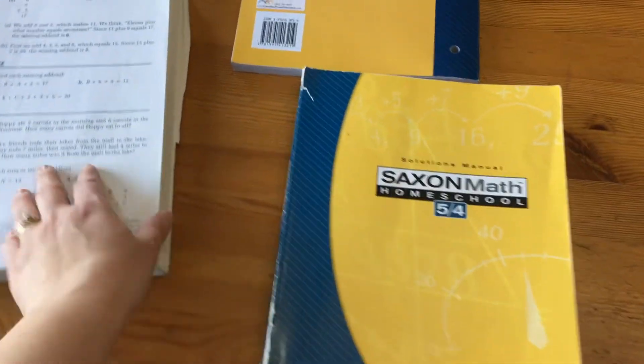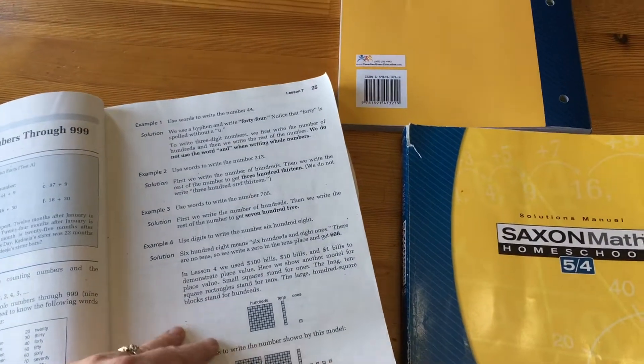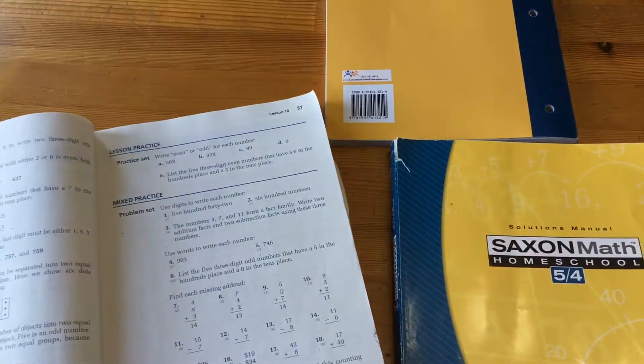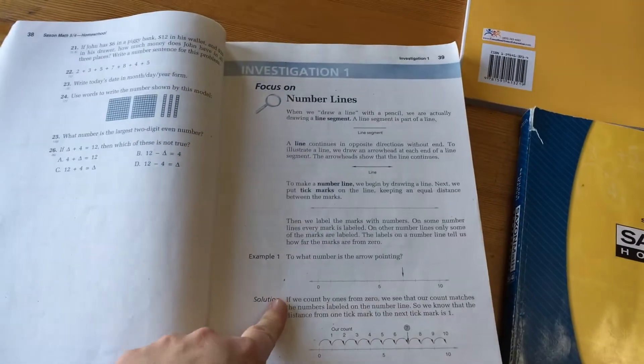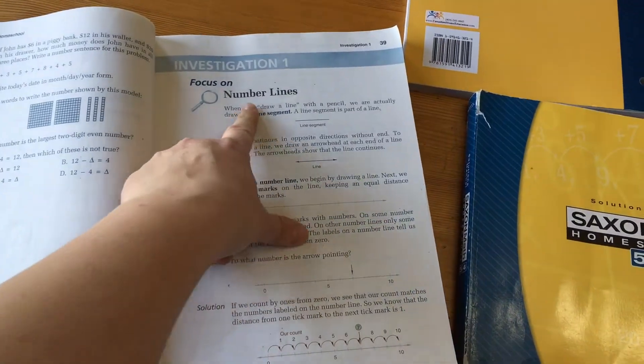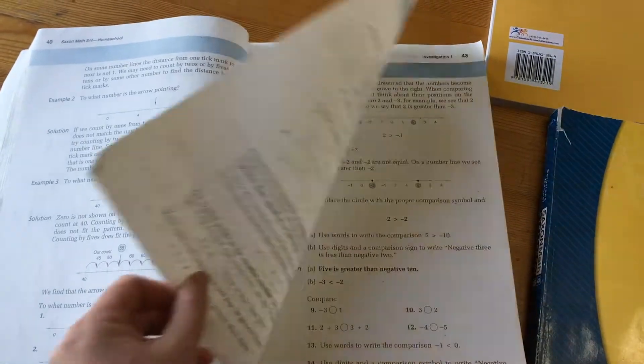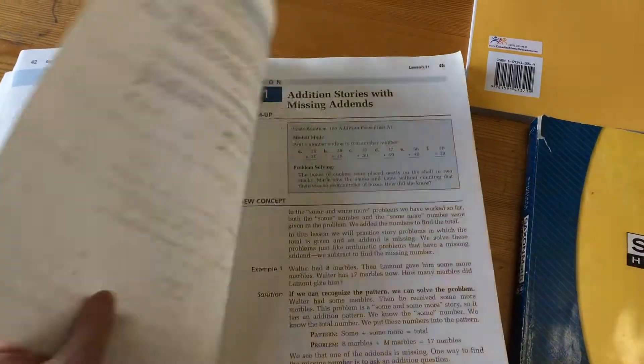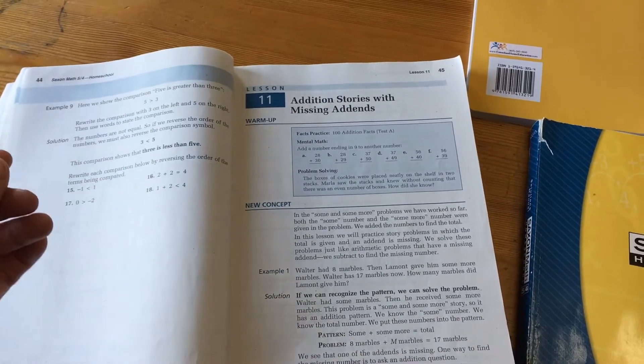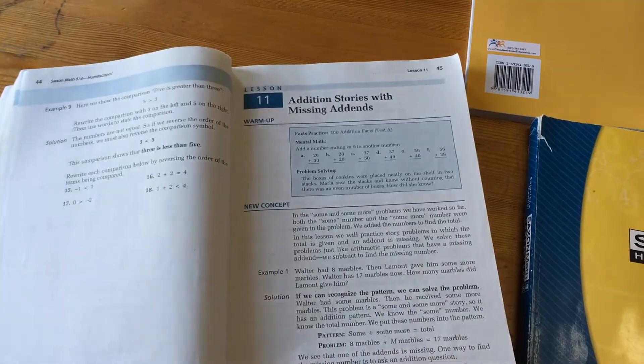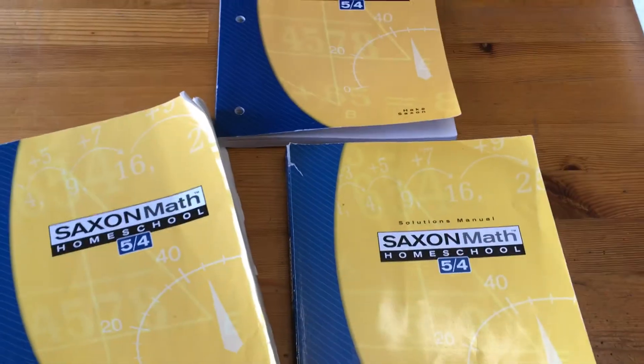Oh, I'll show you the investigation. So investigation is usually done after like the 10th lesson. So that's lesson 10 here. And there's investigation. So this one is focusing on number lines. And again, it asks them to do certain things. And then that's it for the day. So it's typically a shorter lesson or more just different, I guess.